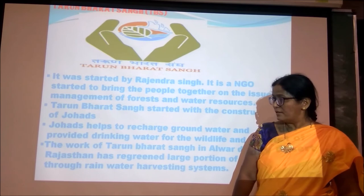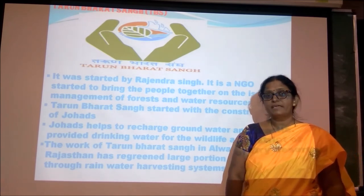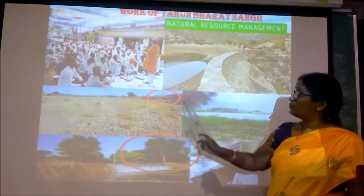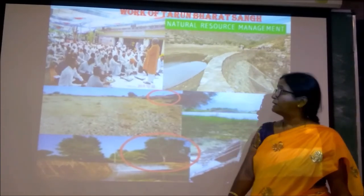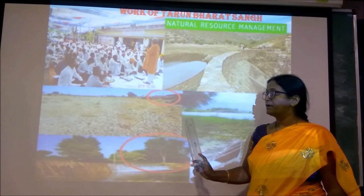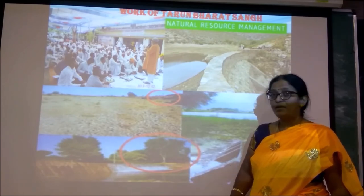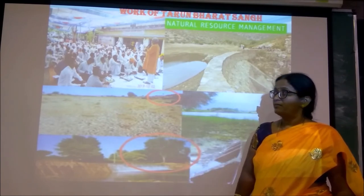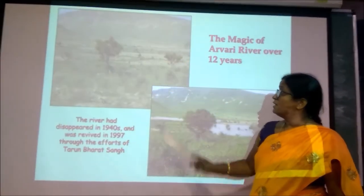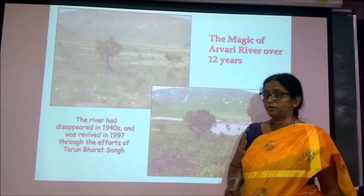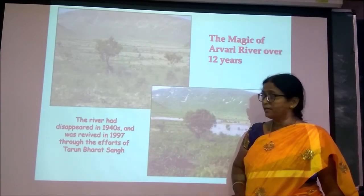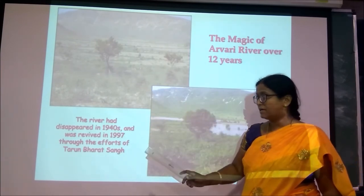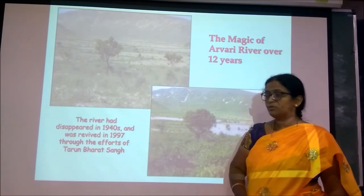The work of Tarun Bharat Sangh especially in Rajasthan has re-greened that drought-like area. They introduced community participation and started their work by constructing johads, a rainwater harvesting system, and soil topography work was also done. By Tarun Bharat Sangh's afforestation work, rivers that had dried up were revived. The Arvari river, which was completely dried up in 1940, was revived completely by 1997.